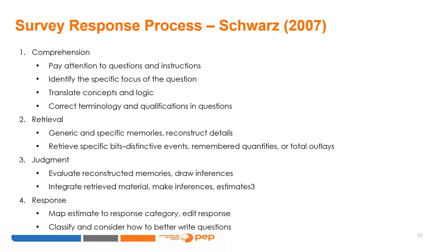Finally, in the response stage, individuals map the estimate to a response category and edit the response. Thus, it is very important to write questions that avoid misrepresentation, evasiveness, or non-informative or non-responsive answers.